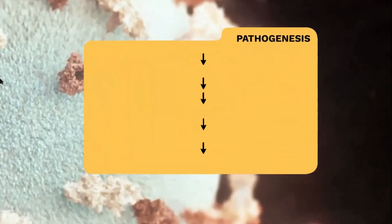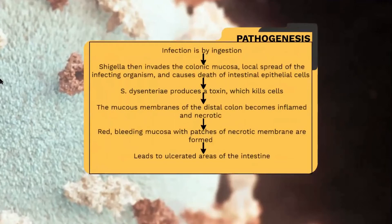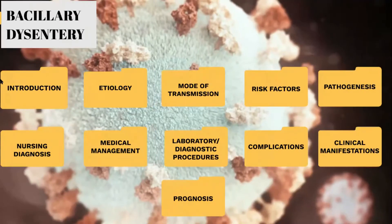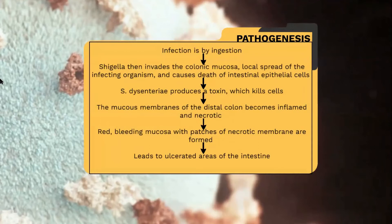The pathogenesis of bacillary dysentery begins with ingestion. Shigella invades the colonic mucosa and causes local spread of the infecting organism, leading to death of the intestinal epithelial cells. Shigella bacteria produce a toxin which kills cells — it is not the actual bacteria but the toxin produced by the bacteria itself, which is very common to most gram-negative bacteria. The mucous membranes of the intestinal colon become inflamed and necrotic, with red bleeding mucosa and patches of necrotic membrane forming, leading to ulcerated areas.